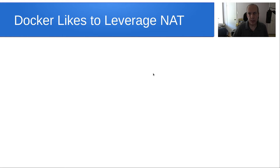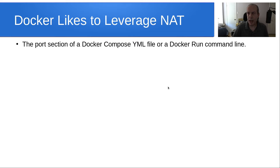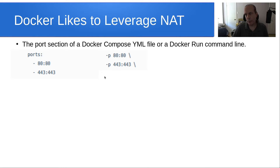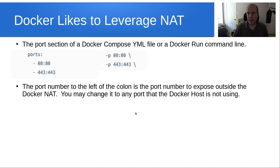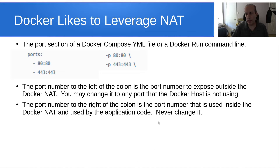Docker likes to leverage NAT by default, using the port section of a Docker Compose YAML file or the Docker run command line. The port number to the left of the colon is the port number to expose outside the Docker NAT network — you may change it to any port number the Docker host is not using. The port number to the right of the colon is the port number actually used inside the Docker NAT and by the application code. Never change it, or you will break the application.